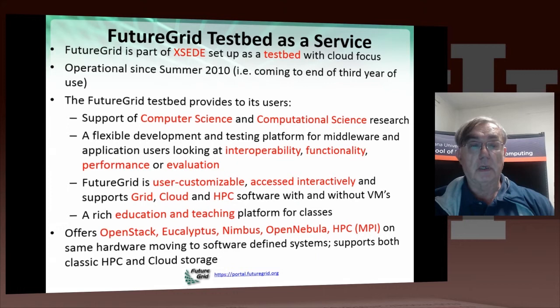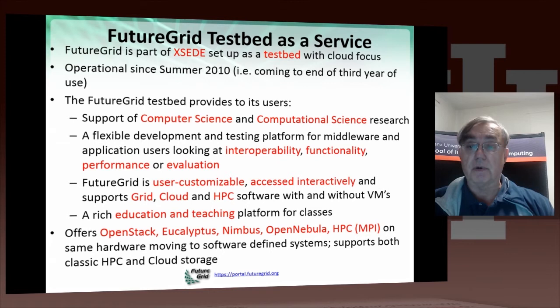We're now coming to the end of our third year of use, and we have one more year to go. The FutureGrid Testbed provides its users support for research that goes all the way from fundamental computer science through very applied applications, commonly called computational science. It provides a very flexible platform for both developing and testing systems, and for looking at issues like interoperability, functionality, performance of software, and evaluating different technologies against each other.